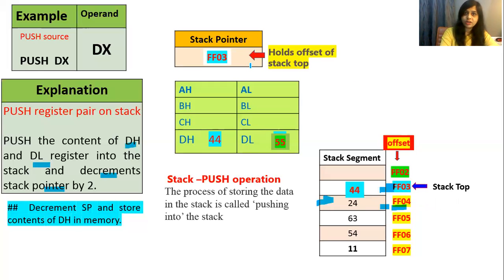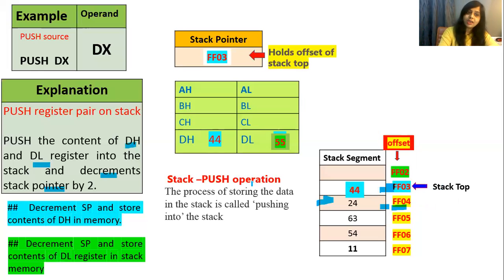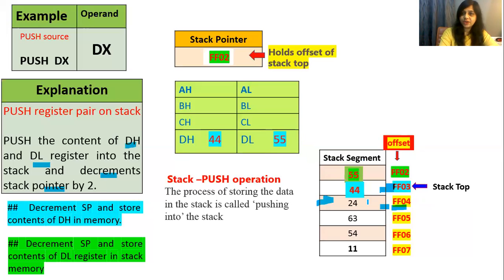The stack pointer holds the offset of the stack top. Then again it will decrement the stack pointer — from FF03 it becomes FF02. Now it will transfer the contents of the DL register, which is 55, into address FF02. Our data is now stored till FF02, so the stack top is now FF02, which is stored in the stack pointer.